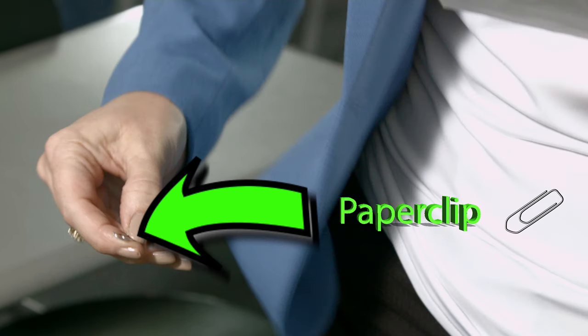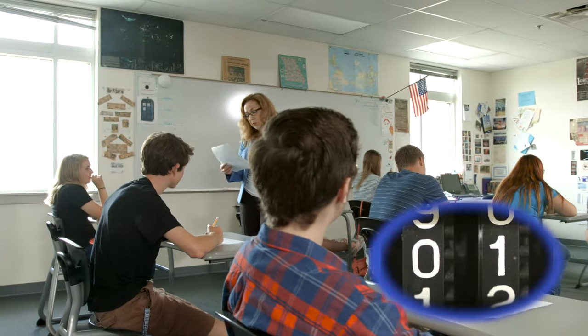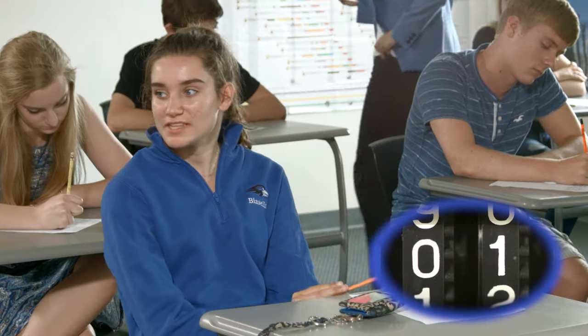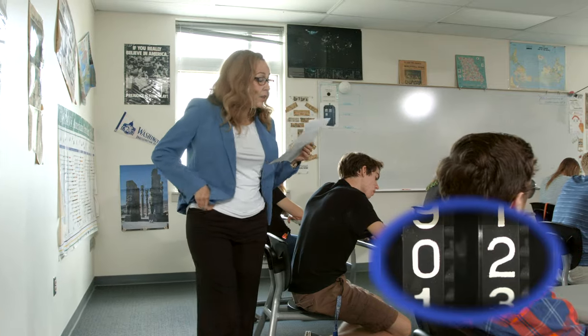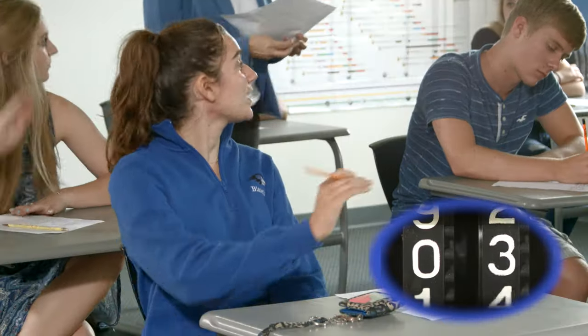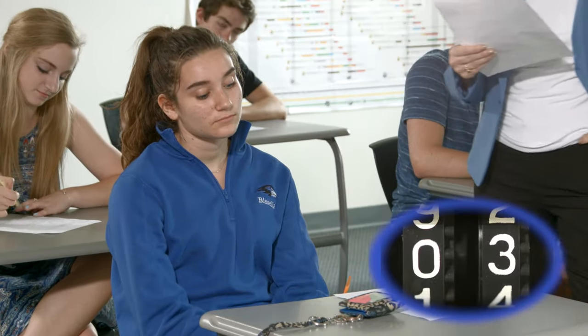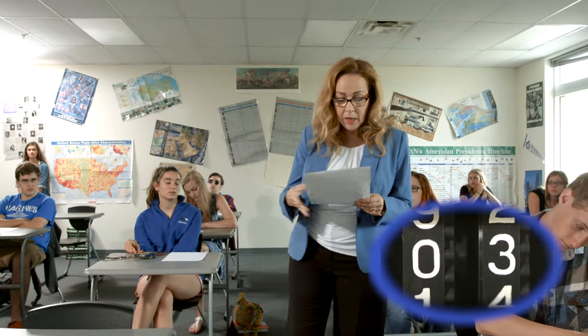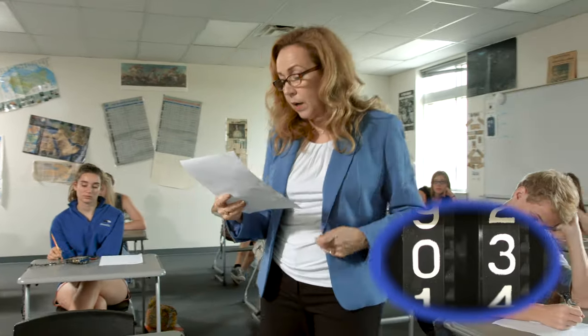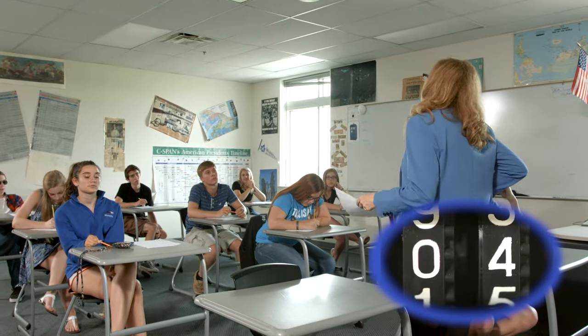Ellis Island was the immigration station in... Austin answers: New York. That is correct. Over 12 million immigrants from all over the world entered the country through Ellis Island. The island that is now Ellis Island was purchased by a local resident named... Evan answers: Samuel Ellis. That's correct, in 1774. When immigration became the responsibility of the federal government in the late 1800s, officials wanted a federal immigration station to be built on Ellis Island.